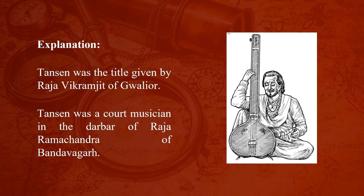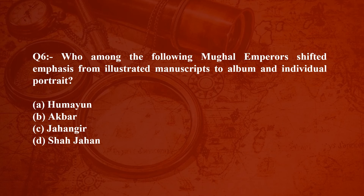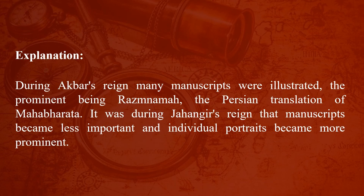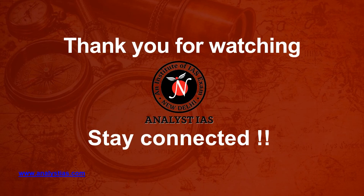Question number six: Who among the following Mughal emperors shifted emphasis from illustrated manuscripts to albums and individual portraits? Option A: Humayun; Option B: Akbar; Option C: Jahangir; Option D: Shah Jahan. The answer is Option C — Jahangir. During Akbar's reign, many manuscripts were illustrated, the prominent one being Razmnama, the Persian translation of the Mahabharata. It was during Jahangir's reign that manuscripts became less important and individual portraits became more prominent. That's all for today — we'll meet you soon with the next episode of the series. Stay connected, thank you.